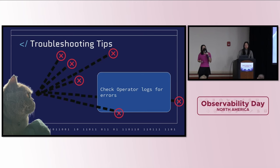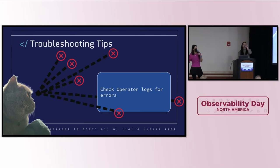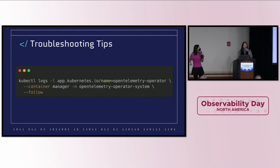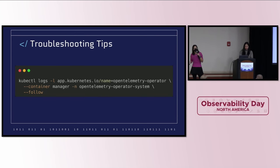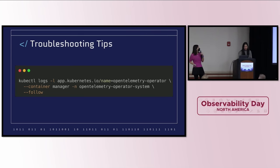Finally, when all other things are not working, check the operator logs. You do need admin access to your Kubernetes cluster to do that. If you don't have admin access, make friends with your Kubernetes admin, or run the kubectl events command as Reese mentioned.